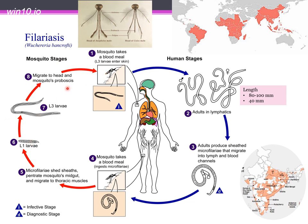The L3 larvae can enter human skin through mosquito bites. These larvae will grow and develop into female worms around 80 to 100 millimeters, while male larvae grow to about 40 millimeters. As they grow, the worms migrate towards the lymphatic system, blocking the flow of lymph.